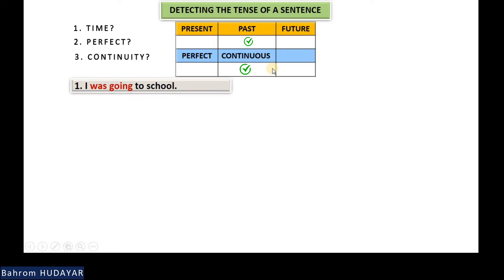If you look at the table, it tells you the tense of this sentence: past continuous. With the help of these three easy questions, you can easily find the tense of the sentence you want to make. All you have to do is ask yourself these three questions. Write down sentences in your own language and ask them — this table will give you the exact tense.